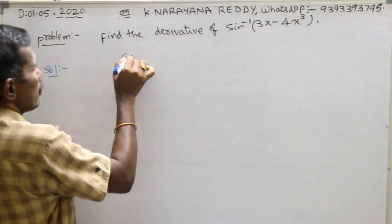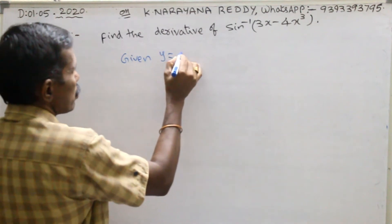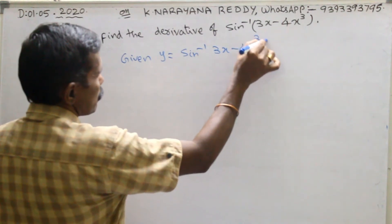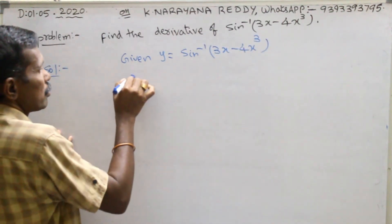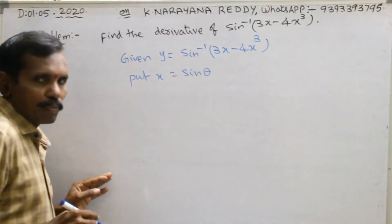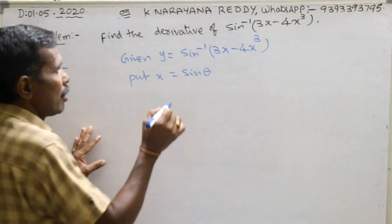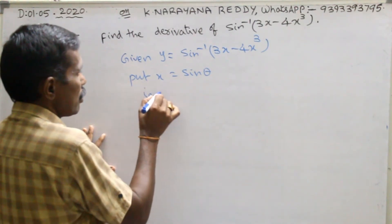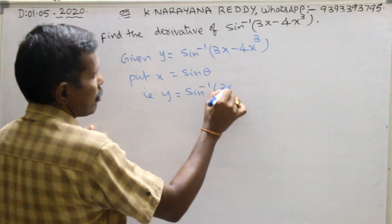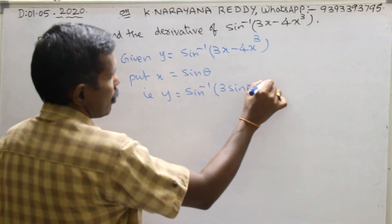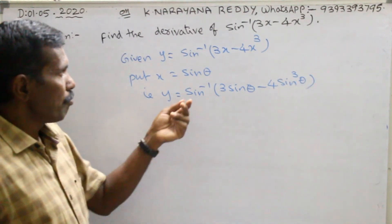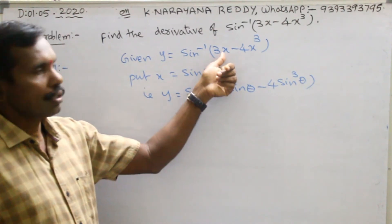Given y equals to sin inverse of 3x minus 4x cube. Put x equal to sin theta. That is, y equals to sin inverse of 3 sin theta minus 4 sin cube theta. I am just placing sin theta in the place of x.